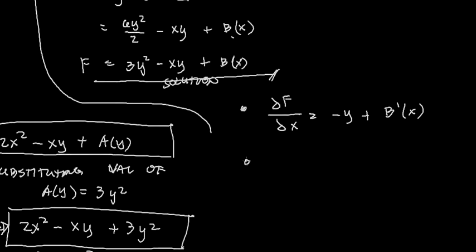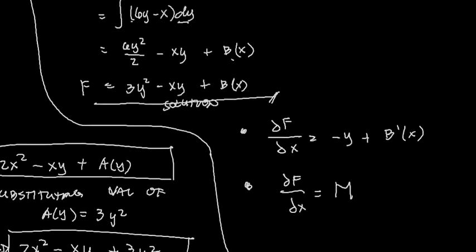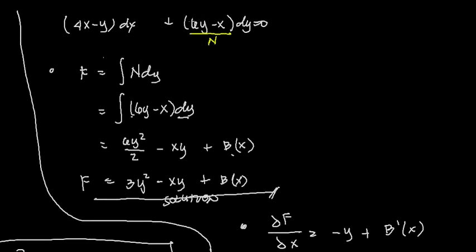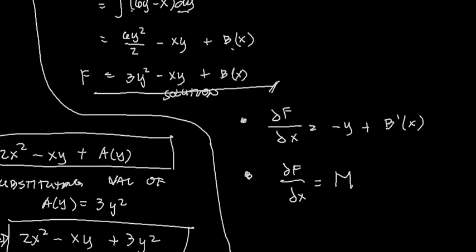Then right after that, our next step is to determine the value of b(x) by equating this to M. So first, we integrate with N dy, then we take the derivative of f with respect to x, and then we equate this with our M, which is 4x - y.